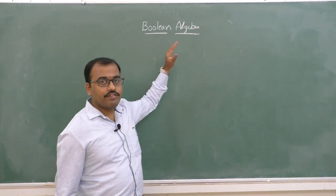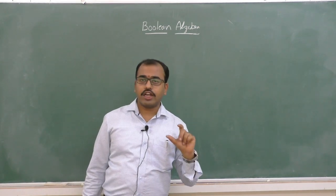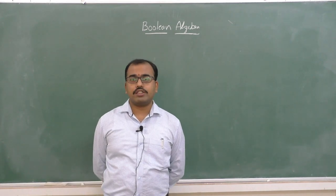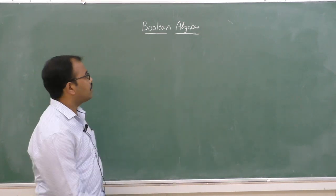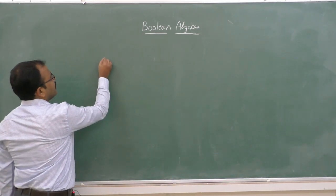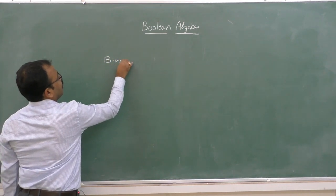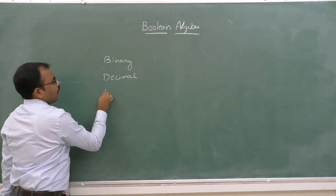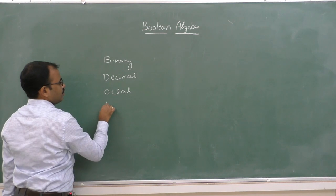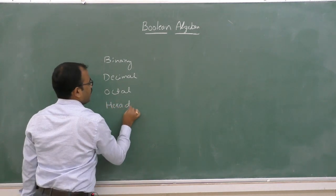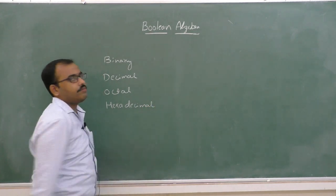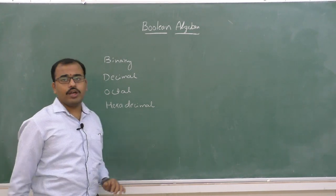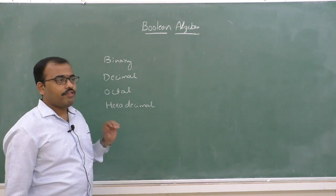Before discussing about this definition, let us recall the number systems. Number system is the representation of numbers. There are different kinds of number systems: one is binary number system, decimal number system, octal number system, and hexadecimal number system. These are the different types of number systems we have studied in our previous year, that is in our first year topics.